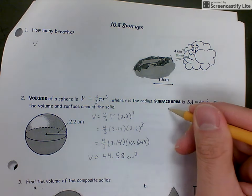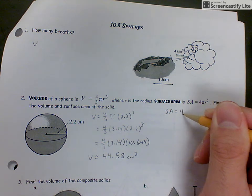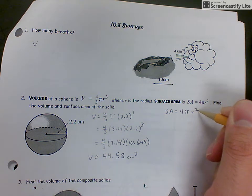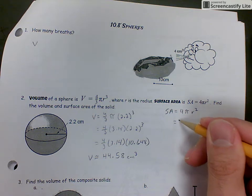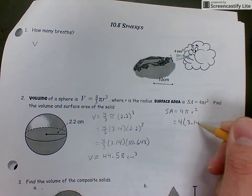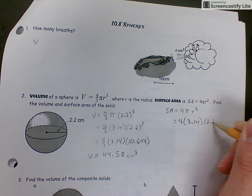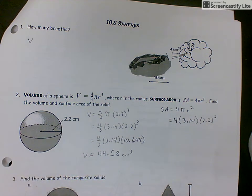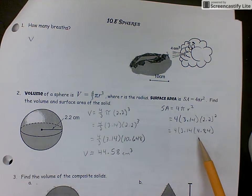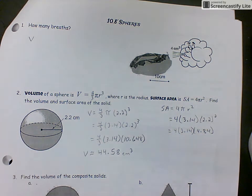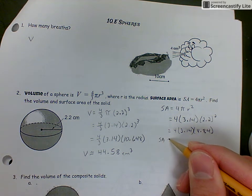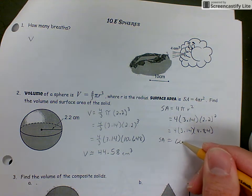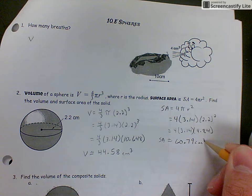Next, we'll figure out surface area. The equation is 4πr². That's 4 × 3.14 × 2.2². Order of operations - do the exponent first. 2.2 squared is 4.84. Plug that into the calculator and the surface area is approximately 60.79 cm².